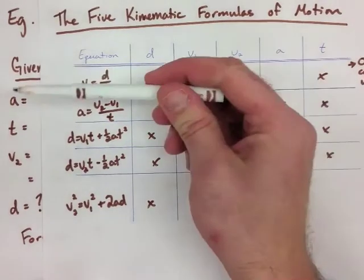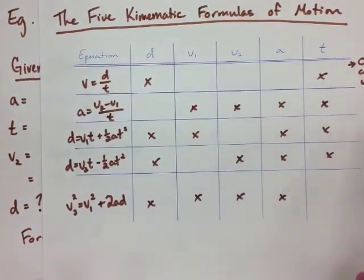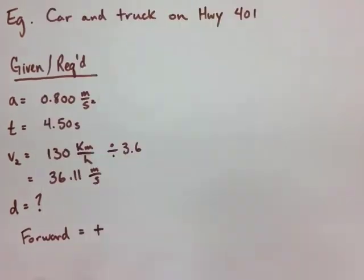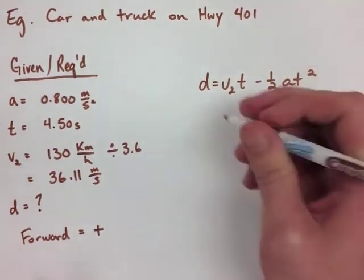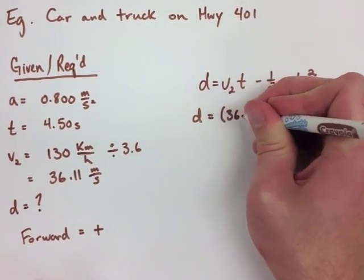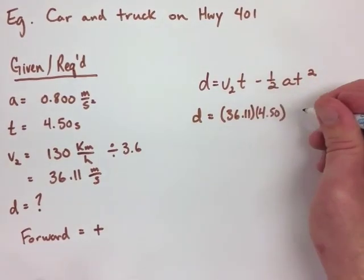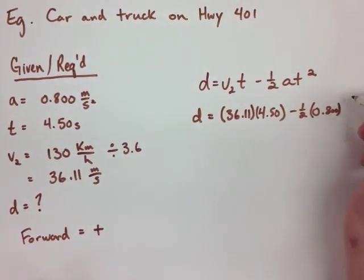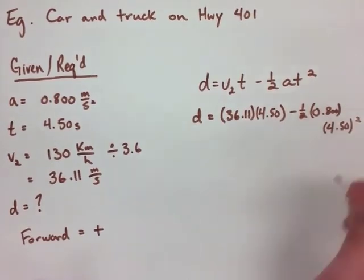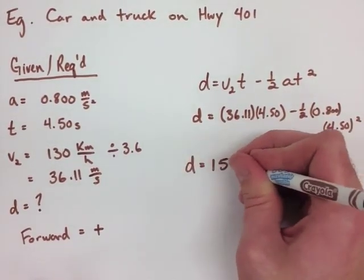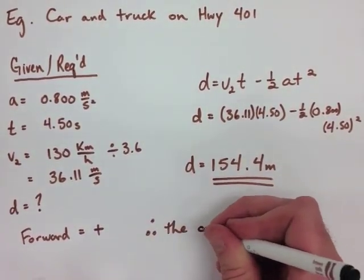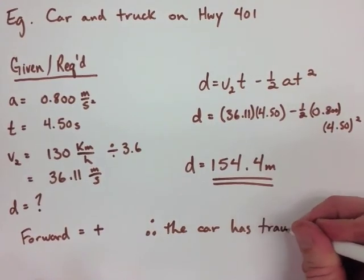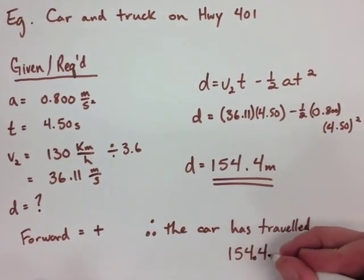Now we look at our chart using all of the information we're given and what we're required. We have the last three columns and need the first column, so it's the second-last equation. We state our equation so that we know what we're substituting into, then sub in our values — not including units here, as we've already included them in our given and required information. We solve for our final displacement, which is 154.4 meters, and put a statement: the displacement is 154.4 meters that the car traveled to pass the truck.